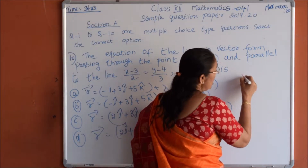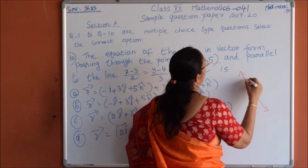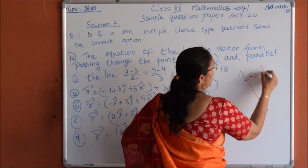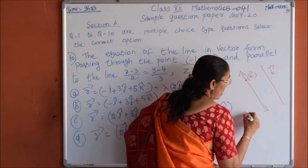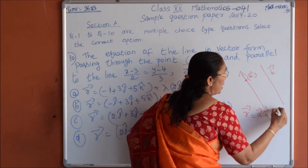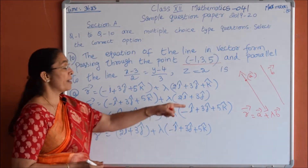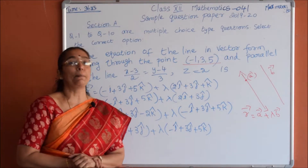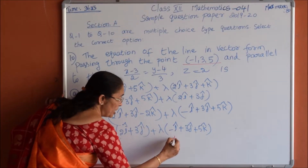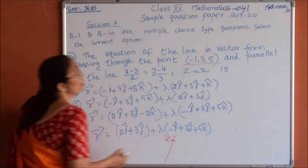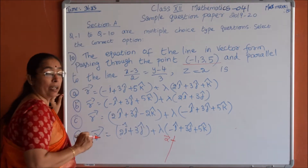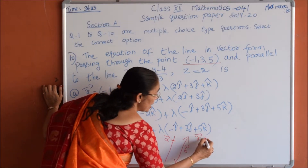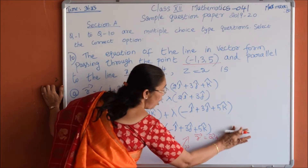We need the vector equation of the line passing through a point and parallel to one vector. If the position vector of the point is A vector and the line is parallel to B vector, the formula is R vector equals A vector plus lambda times B vector. This is the vector equation of a line passing through point A and parallel to vector B.